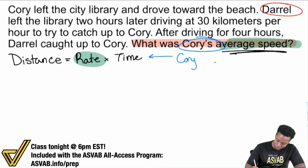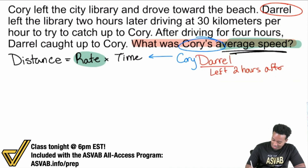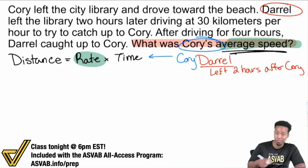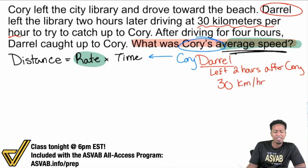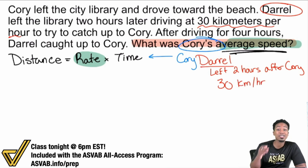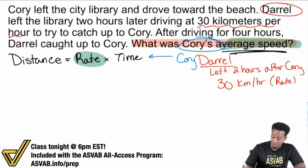For Daryl, the information I have is: left two hours after Corey. And 30 kilometers per hour — what kind of unit is that? A rate is a unit that blends two things together; in this case, kilometers and hours. So that is a rate, that's a speed. We'll write that down.